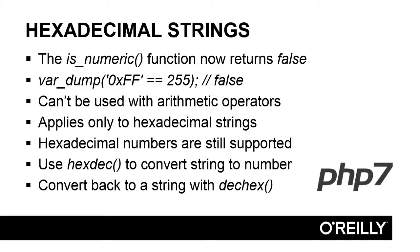This next issue sounds worse than it actually is. If you pass a hexadecimal string to the isNumeric function, it'll now return false. And using the equality operator to compare a hexadecimal string to its decimal equivalent will also return false, whereas in previous versions they both returned true. Using a hexadecimal string with arithmetic operators will always produce the wrong answer, because the string will be cast to zero. However, casting a hexadecimal string to an integer or float in previous versions of PHP always produced zero, so using hexadecimal strings in calculations was always problematic.